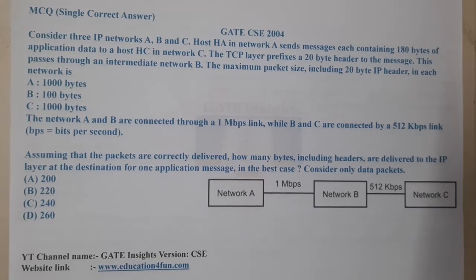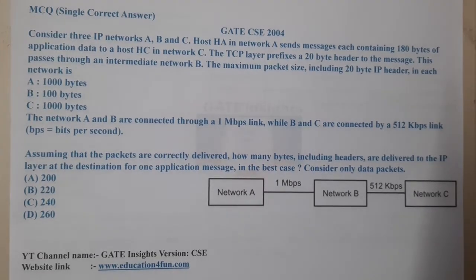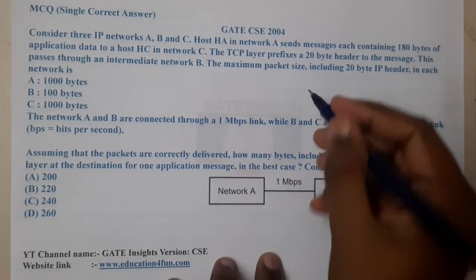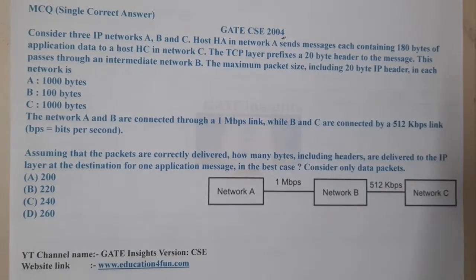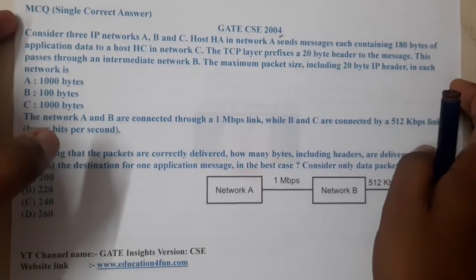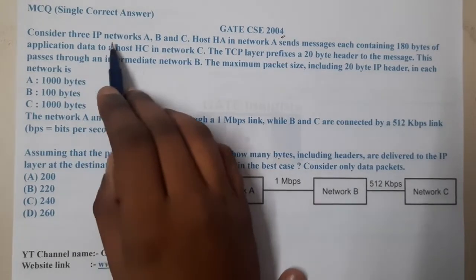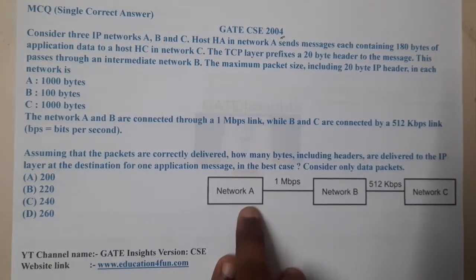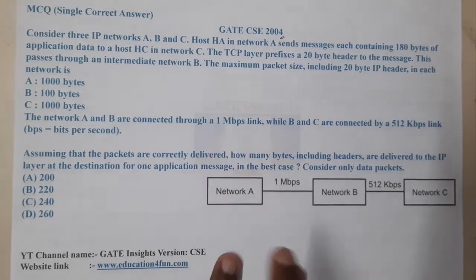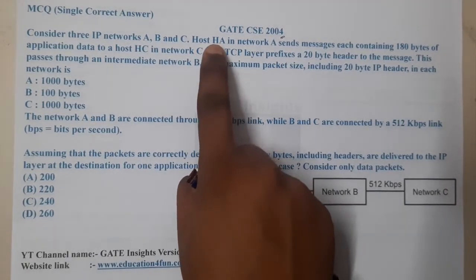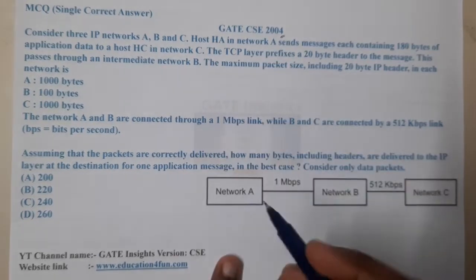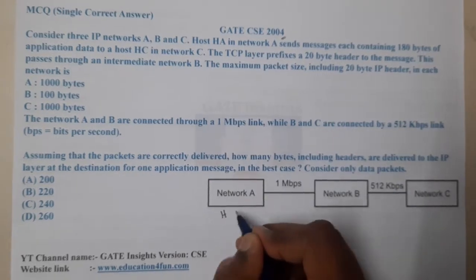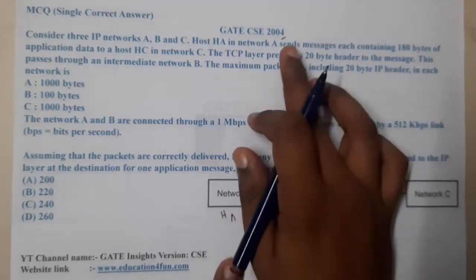Hello guys, welcome back to our next lecture. This question belongs to GATE CSC 2004. The given question asks us to consider three IP networks A, B, and C. There is a host HA in network A.